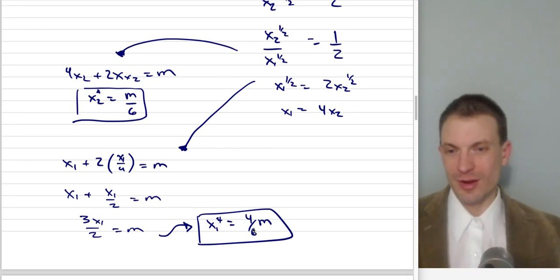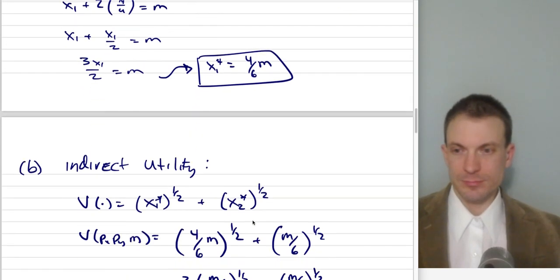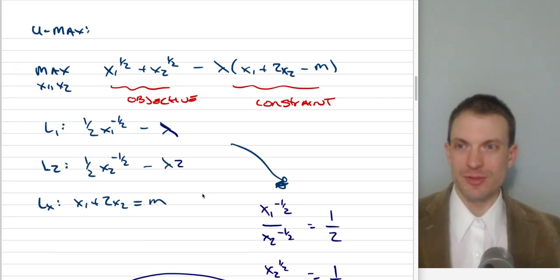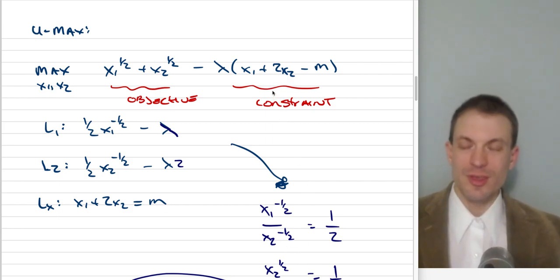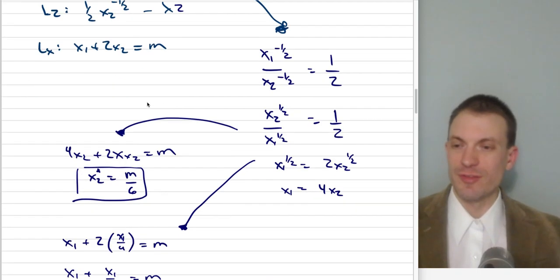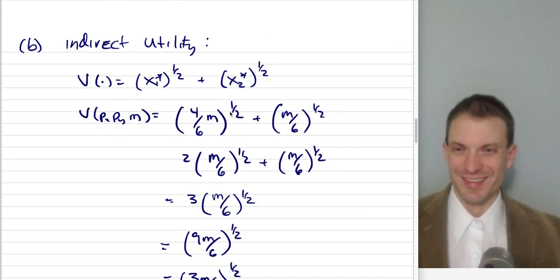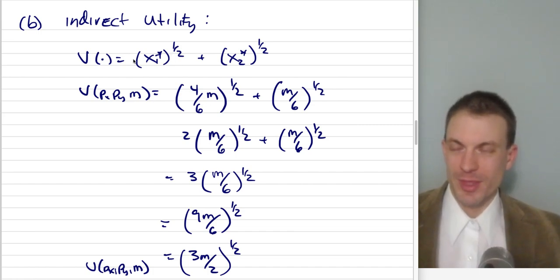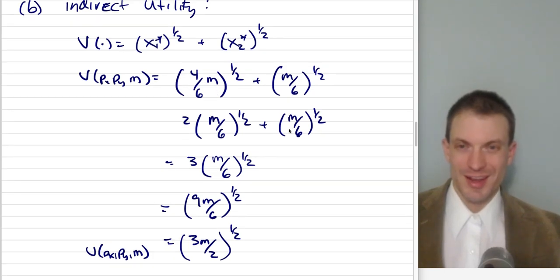Now we're going to find the indirect utility function. To do that, you take your Marshallian demands and plug them into the objective function. The sequence is: get the tangency condition, plug it into the constraint, get your demands, then plug your demands into the objective to get the value function — in this case the indirect utility function. So here's our indirect utility function: I'm evaluating my original utility at the optimal demands.